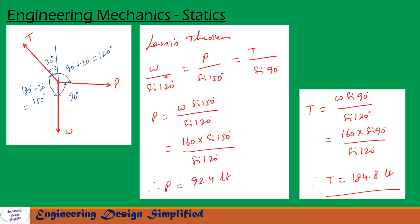Similarly, from first and last terms, we can write T equals W sine 90 by sine 120. After substituting and simplifying, we get T equal to 184.8 pounds.